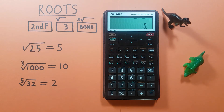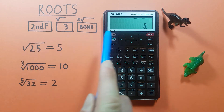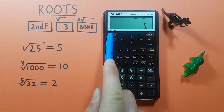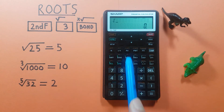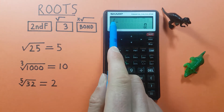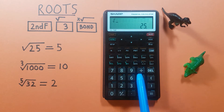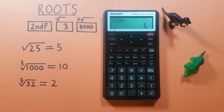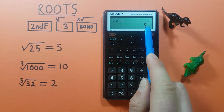So for starters, if we just want to square root a number — for example, find the square root of 25 — we start by pressing the second function key and then the 3, because that was our square root. Then we enter in our number after the square root sign. So 25, press equals, and we see at the top of the screen the square root of 25 equals 5.